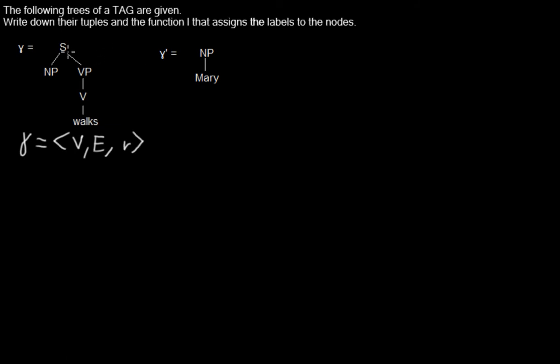So first we are starting to number the nodes. I will write it here like a shadow of this tree. So the S node will be our V0, NP will be our V1, and we are going down in the tree with the numbering. VP will be our V2, then we have V3, and Vox will be our V4.